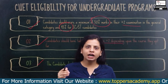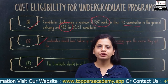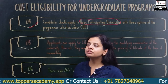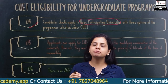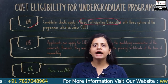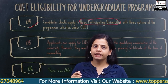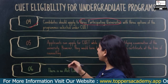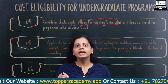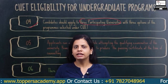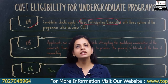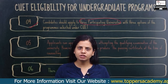The fourth criterion is that you need to select a minimum of three participating universities, and under that, you need to select at least three programs as well. Regarding who can appear: if you have completed your plus two, you can sit for CUET. If you are currently pursuing your plus two, you can also give the CUET examination.